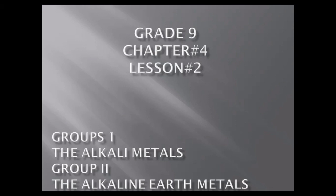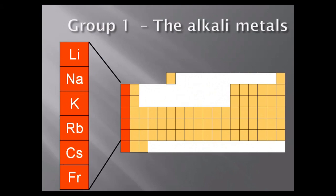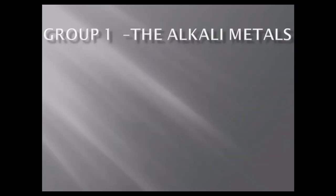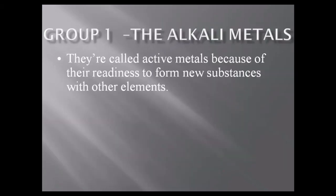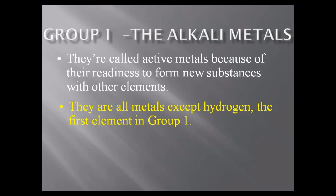Today we will talk about Group 1 and Group 2 of the periodic table — the alkali metals and alkaline earth metals. Group 1, the alkali metals, consists of lithium, sodium, potassium, rubidium, cesium, and francium. They are called active metals because of their readiness to form new substances with other elements.